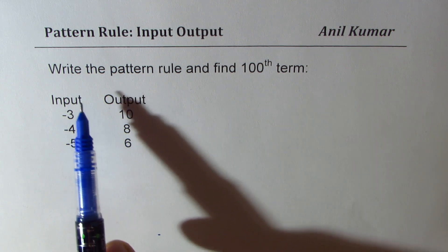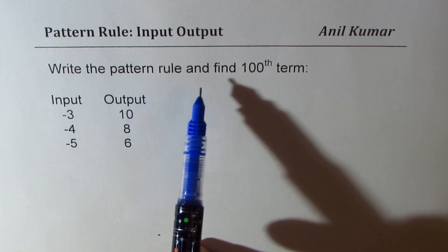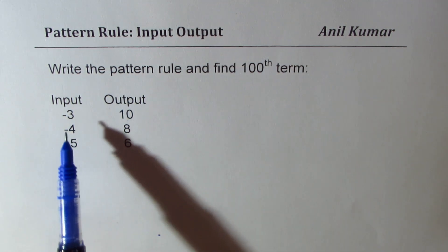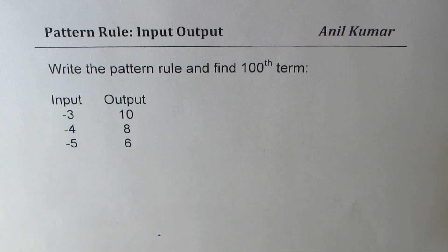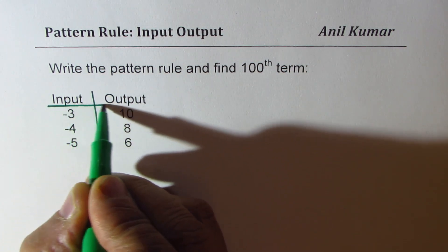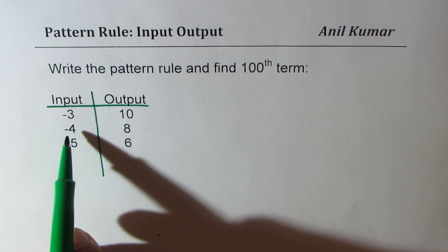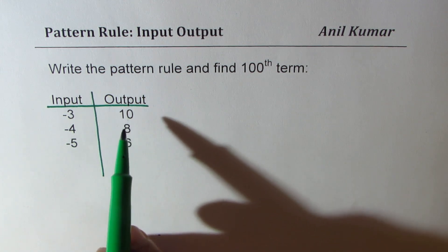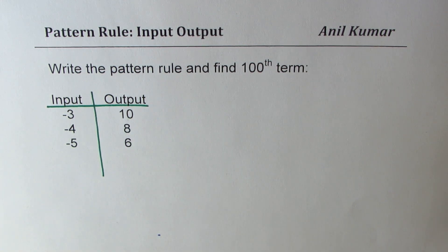So here is an excellent question from one of our viewers. The question is: write the pattern rule and find the hundredth term. We are given input and output. The input is minus three, minus four, minus five. Output is ten, eight, and six for their corresponding values.